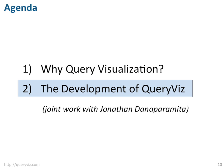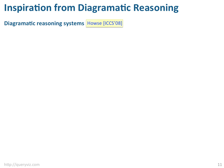In the second part of this talk, we will look at QueryWiz, a query visualization system developed in collaboration with Jonathan Dana-Paramita, a former undergraduate student at the University of Washington and now a graduate student at the University of Michigan. We will look at some of the design decisions made when developing our language. Our visualization was foremost inspired by a body of work on Diagrammatic Reasoning Systems — reasoning by means of visual representations. Researchers here have been working on means for conveying logical statements in a simple and intuitive way.